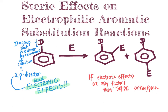But electronics only tell part of the story — a major part, but not the full story. The other part we need to consider is sterics. When steric effects are considered as a second factor, the larger and bulkier the directing group, the stronger the preference for making the para-product over the ortho-product.